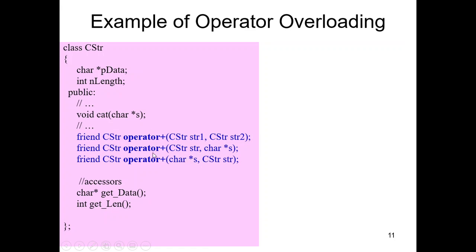In the string class example, the addition operator is overloaded for string concatenation, not numerical addition. When you add two strings, they are concatenated. The C++ standard string library already provides this — you can concatenate strings using the addition operator. The operator function internally calls a concatenation function to concatenate the two strings.